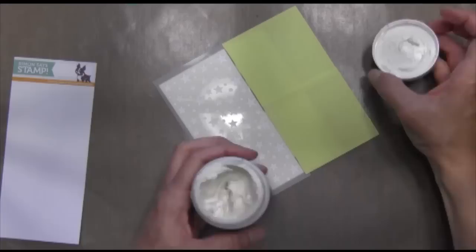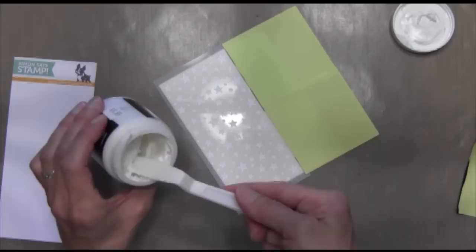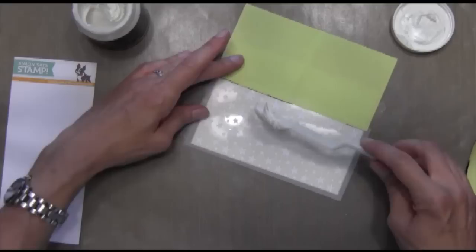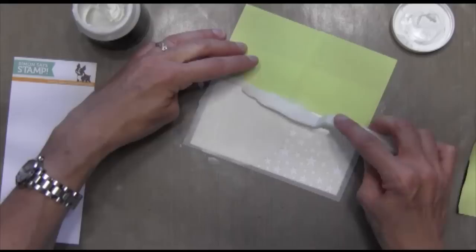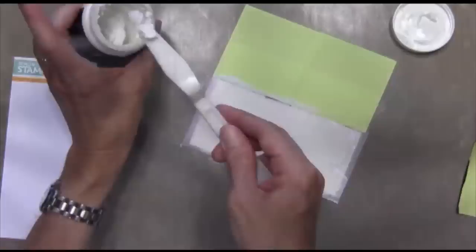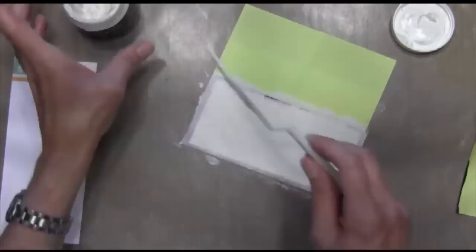When you apply your embossing paste, the easiest way to do that is to use the back of the spatula. It's just much easier to spread that way. So put a bunch on the back and then you're just going to kind of wipe it across. It's kind of like spreading peanut butter across your stencil. For this particular application, I'm trying not to have any lines in it, so I'm making it really smooth.